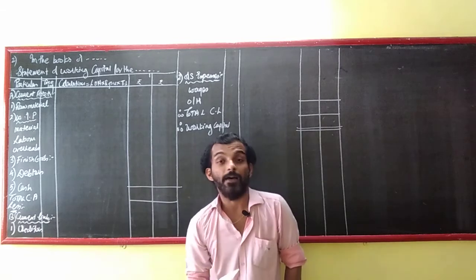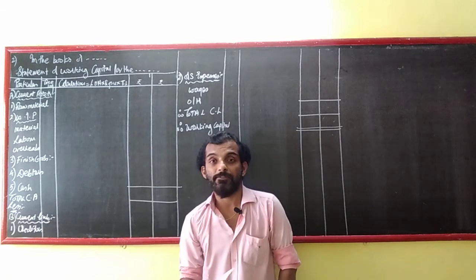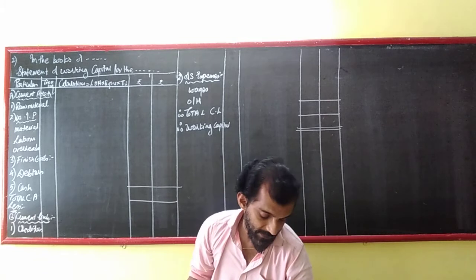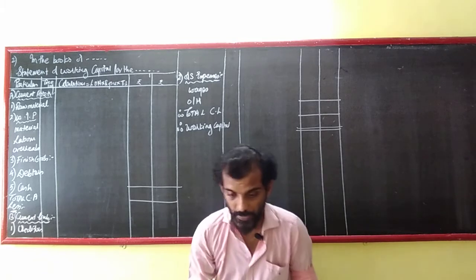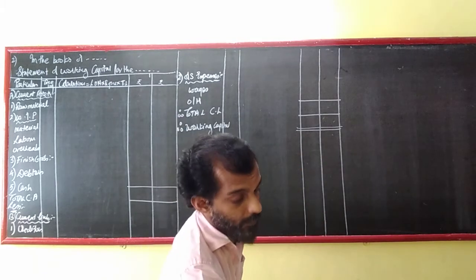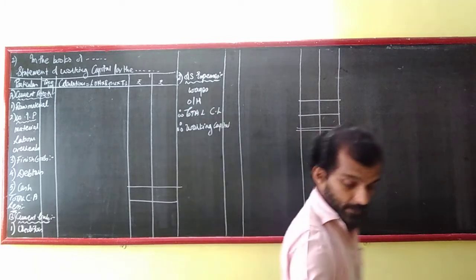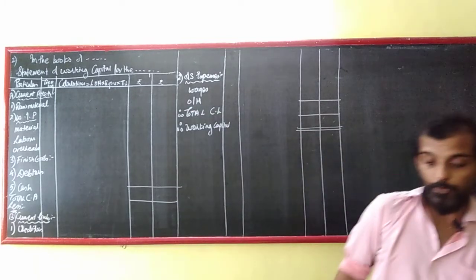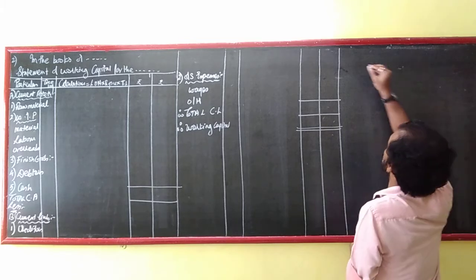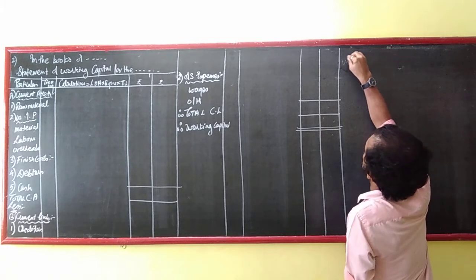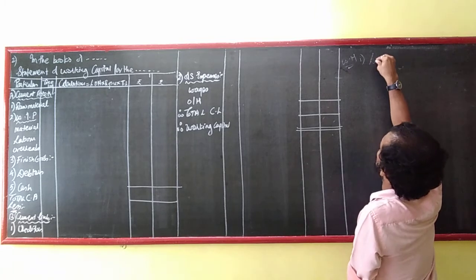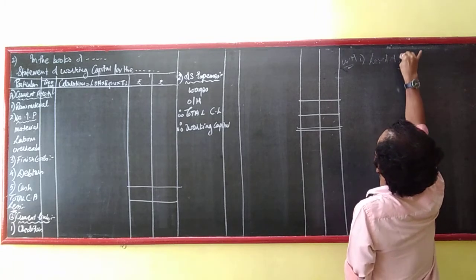For working capital, the work-in-progress section — we have done the same thing as before. But before going ahead, let us find the level of activity. Working Note number 1: Level of Activity.